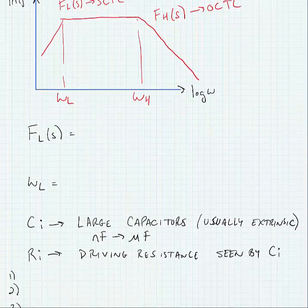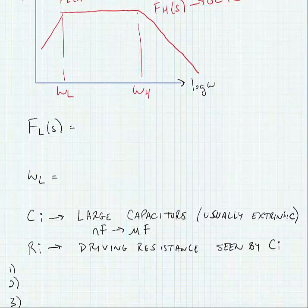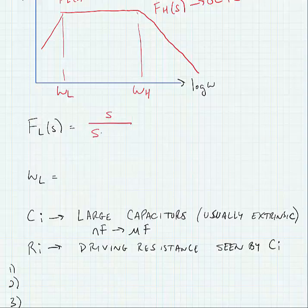Now, what we assume in our method is that we have a one-pole, one-zero response given by the following expression: S divided by S plus omega L. So we have a zero at DC that causes this increase in the output amplitude until we reach the pole where the amplitude flattens out.